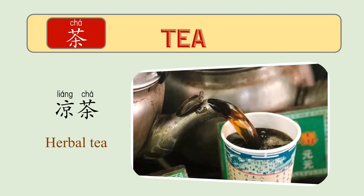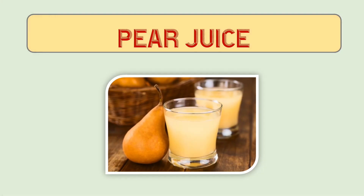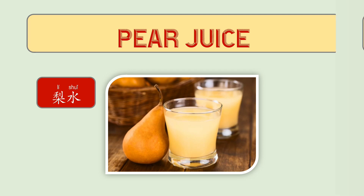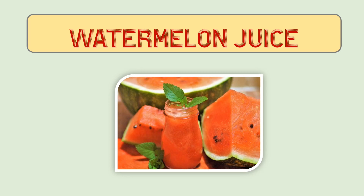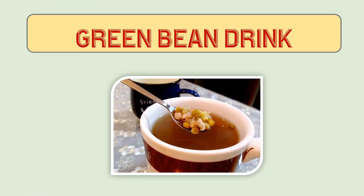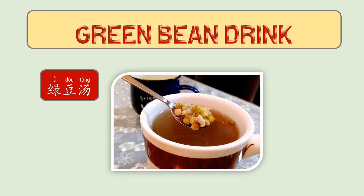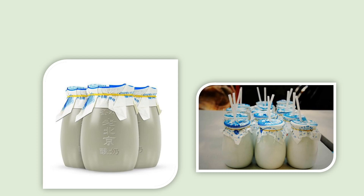Now let's look at other kinds of drinks that will help you reduce heat during summer. Pear juice is called 梨水. Next is also a juice — watermelon juice, 西瓜汁. Here 汁 means 'juice' and 西瓜 means 'watermelon.' Another popular drink among Chinese people is green bean drink, called 绿豆汤. Usually they drop in a few cubes of crystal sugar to make it a healthier drink.